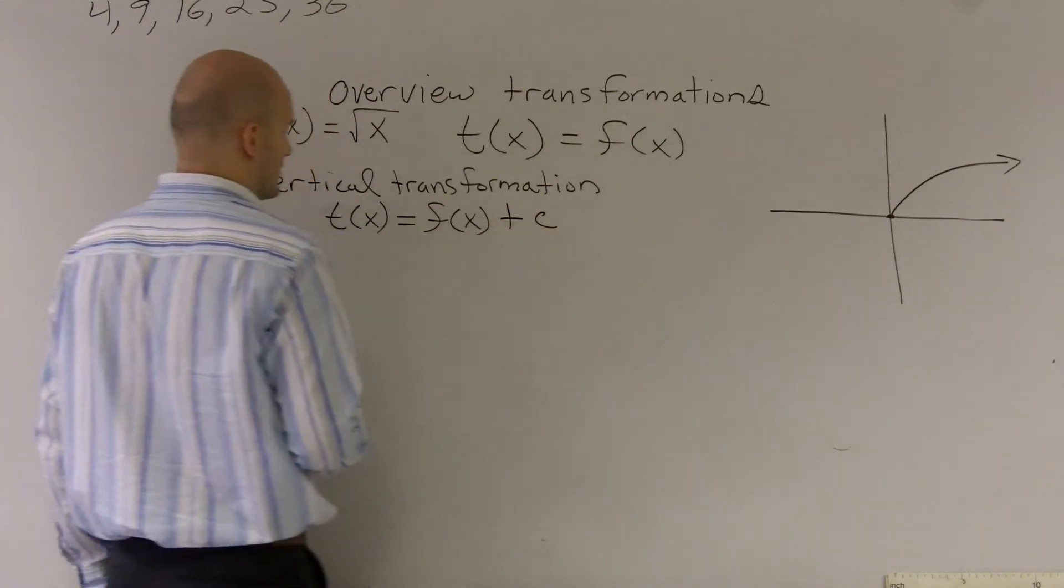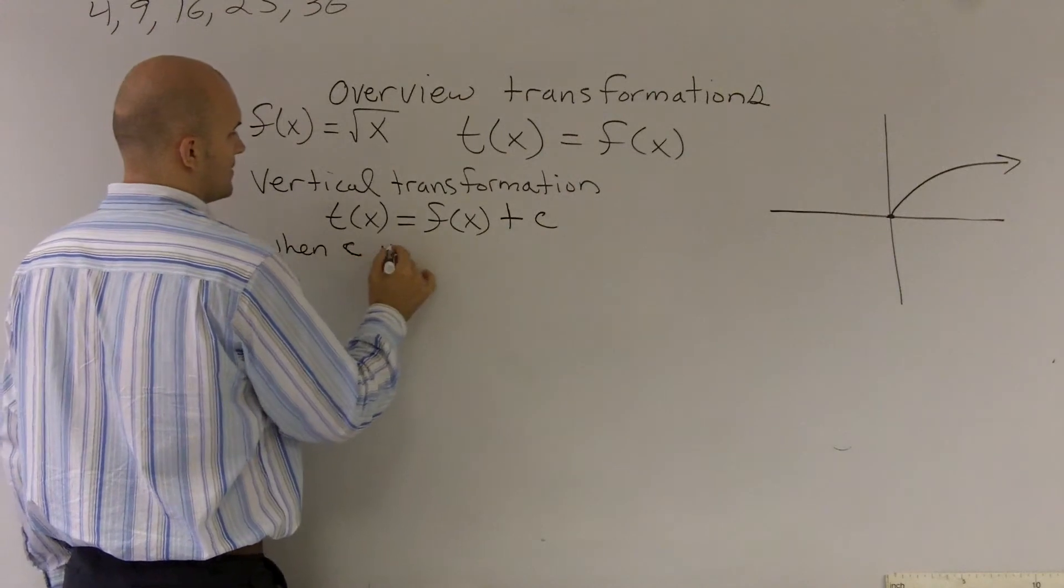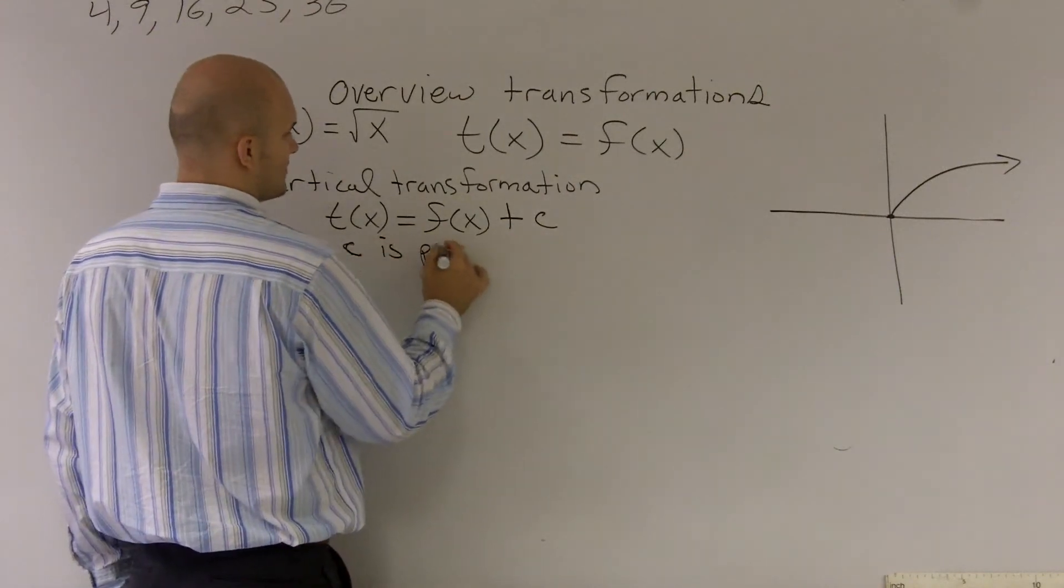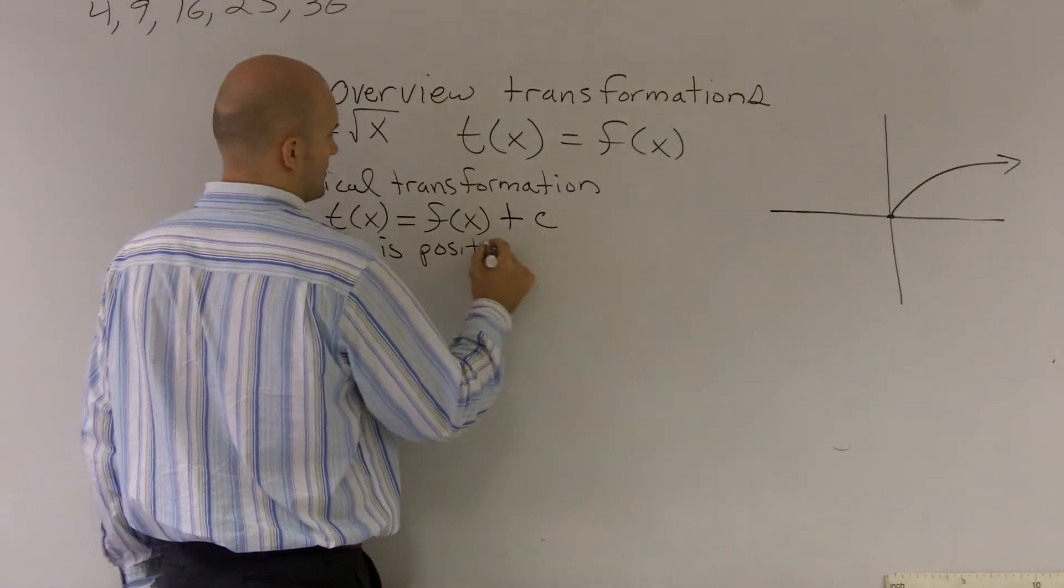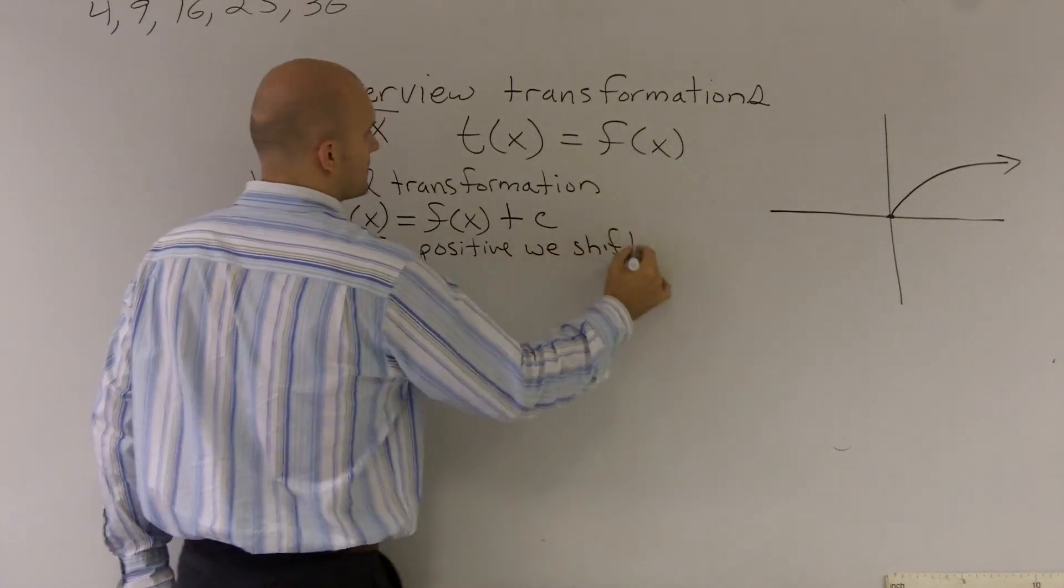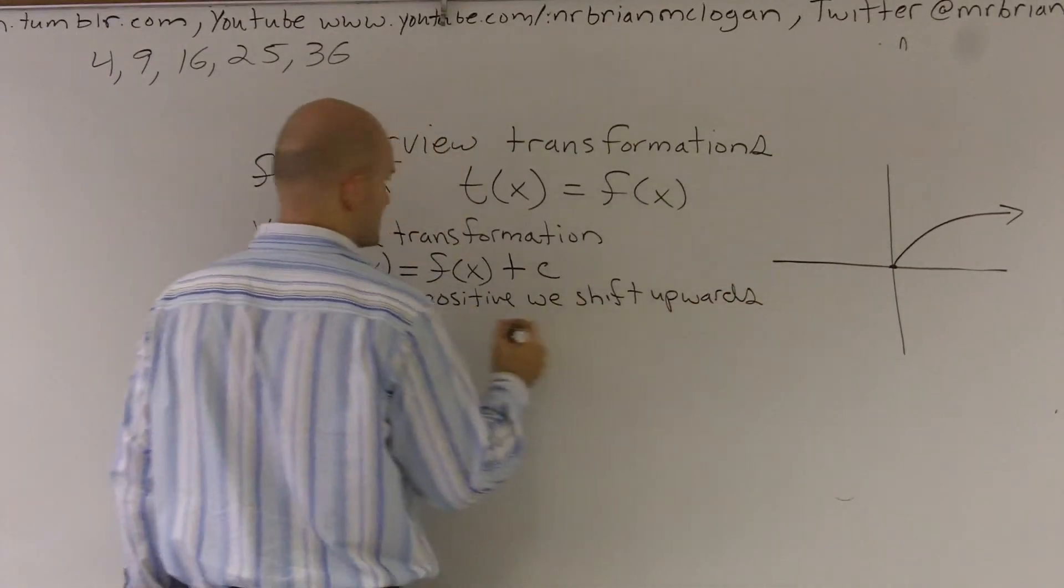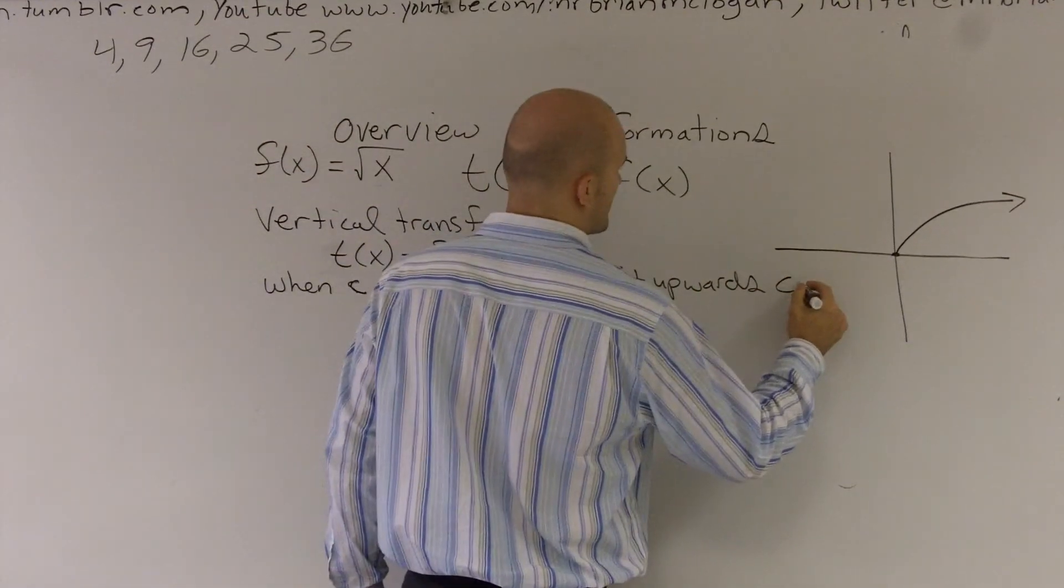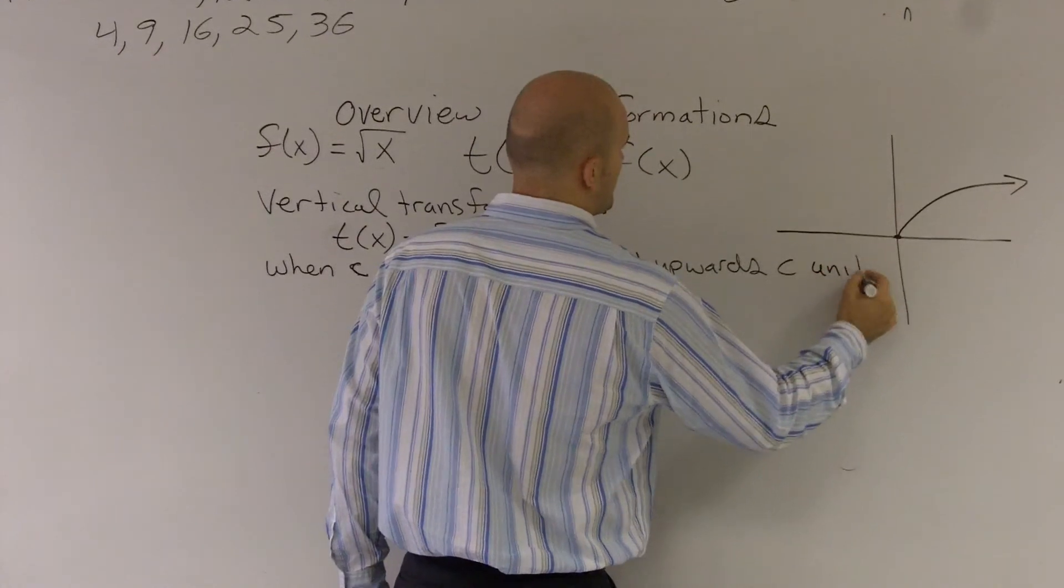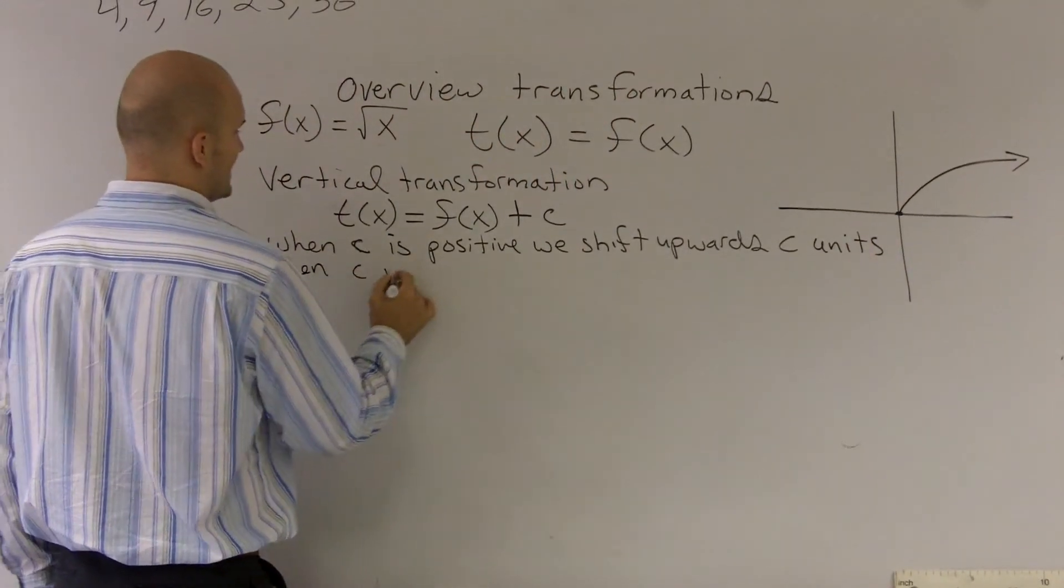When c is positive, we shift upwards c units, and when c is negative, we shift down c units.